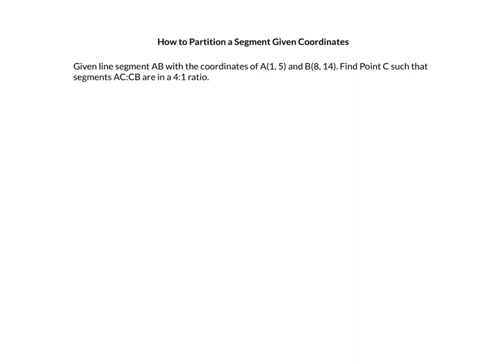Hey everyone, it's Mr. N here, and today we're going to talk about how to partition a segment given the coordinates. Sometimes this is called a directed line segment, but basically the problem would be something like this: given line segment AB with the coordinates of A at (1, 5) and B at (8, 14), find point C such that segments AC to CB are in a 4 to 1 ratio — in other words, where do I place point C to get this 4 to 1 ratio?